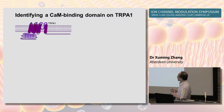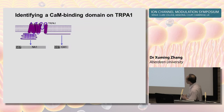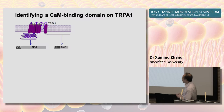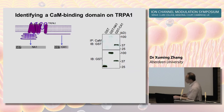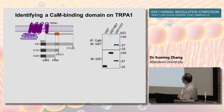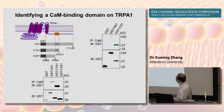We next tried to identify the calmodulin-binding regions on TRPA1. To this end, we constructed two GST-fusion protein constructs containing the N-terminal and C-terminal of TRPA1 respectively. We purified these two proteins and used them for a calmodulin pull-down assay. Calmodulin pulled down the C-terminal of TRPA1 but did not pull down GST alone or the N-terminal of TRPA1. Using progressively truncated C-terminal constructs, we found that deleting only 16 amino acids completely abolished the binding of TRPA1 to calmodulin.